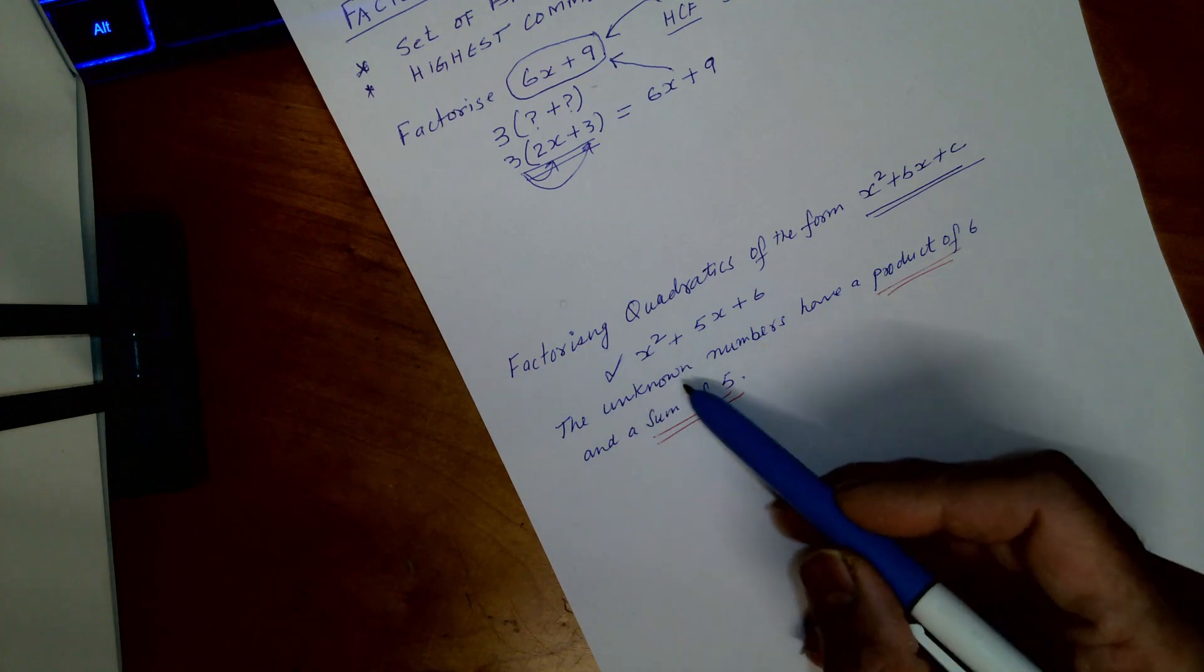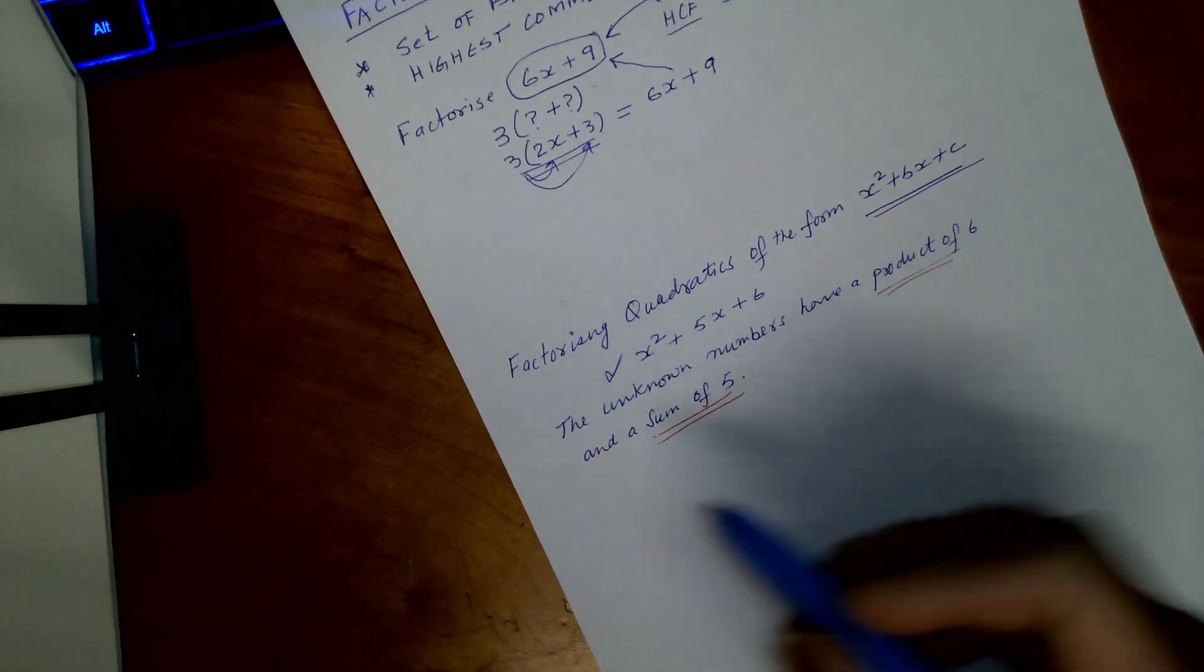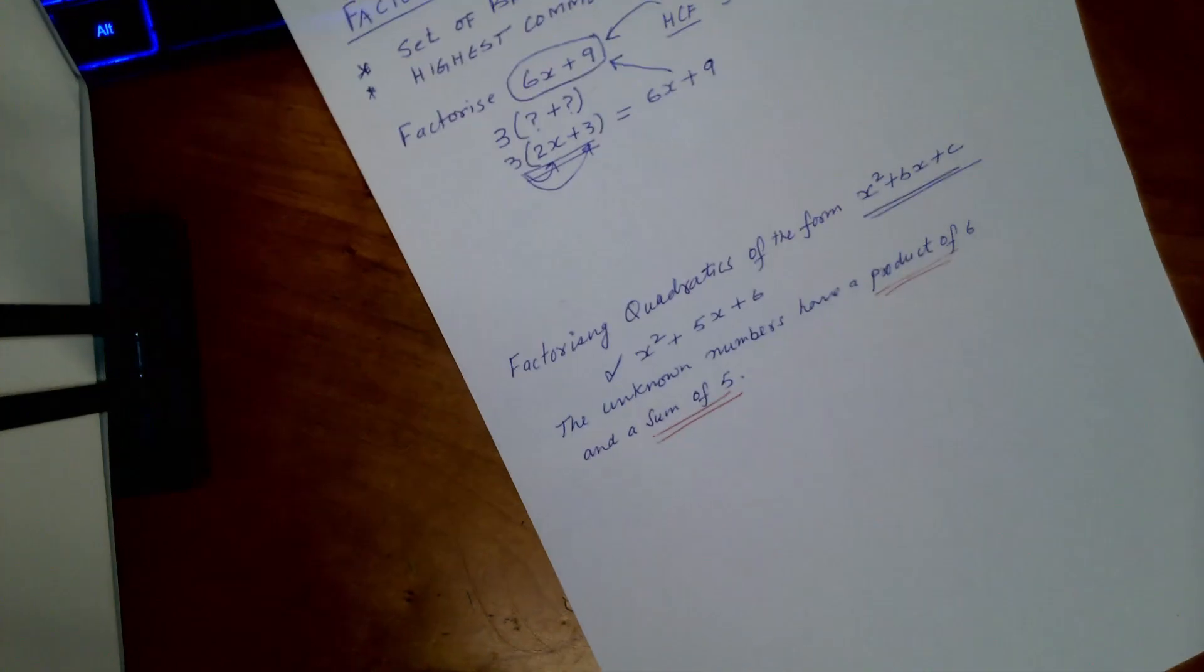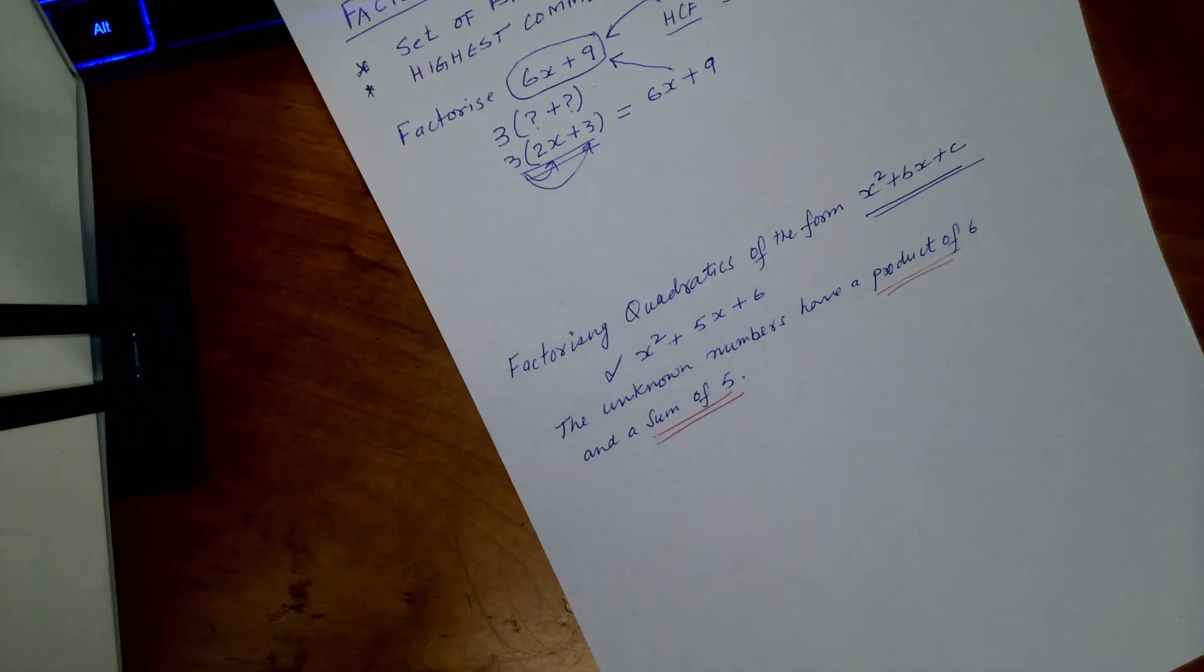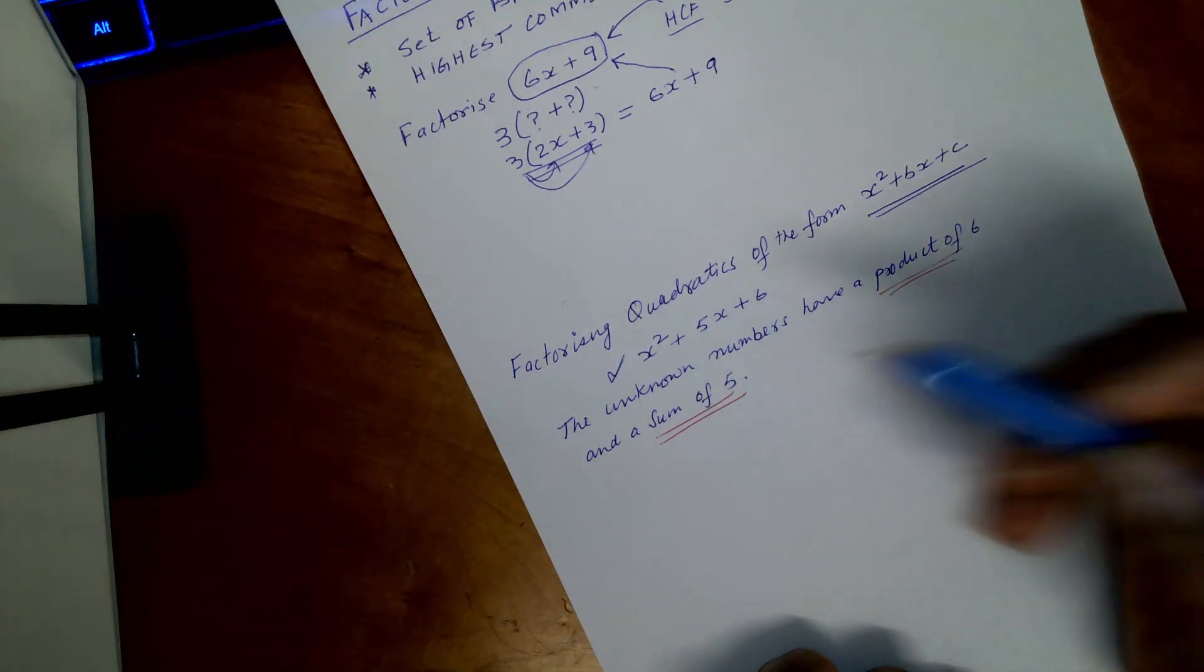Okay, what you need to see here is that the unknown numbers have a product of 6 and sum of 5. So this is where you need to really understand what exactly this means.